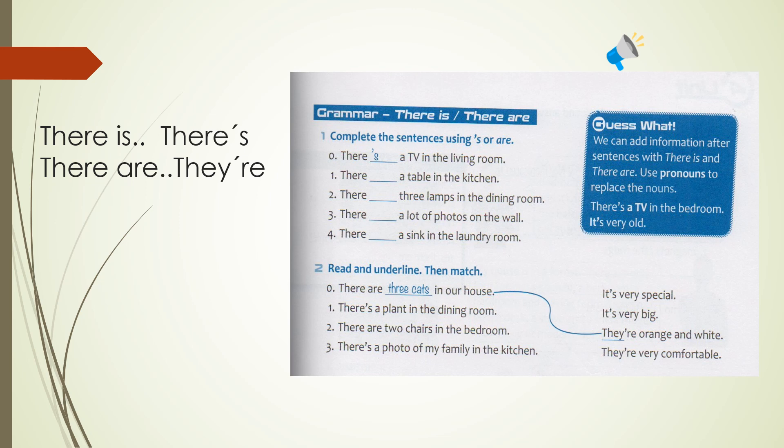There is a table in the kitchen. Esta misma situación se me da acá en el ejercicio 3 y en el ejercicio 4, que también tiene una A, también son singulares, a excepción de la oración número 2. There are three lamps in the dining room. Me dice de una vez tres lámparas, lo que significa que esta es una oración en plural. Por lo tanto, no le voy a escribir is, sino que le voy a escribir are.